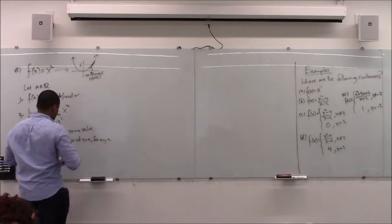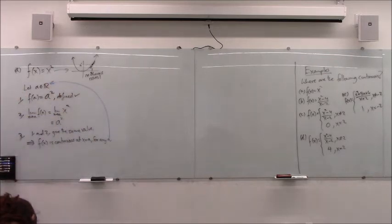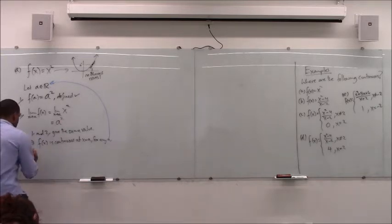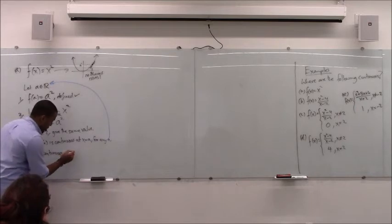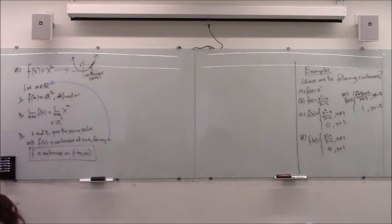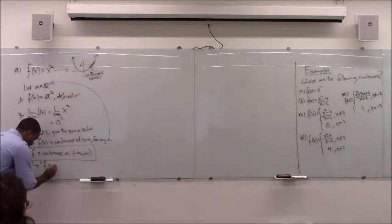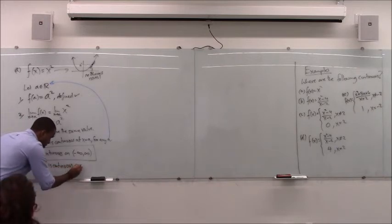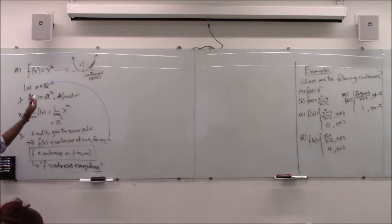In fact, since a is any real number, f is continuous on the entire real line — minus infinity to infinity. Another way to say it: f is continuous everywhere. No matter where you are, you can plug in the value and it'll equal the limit at any point on the graph of x squared.